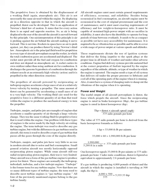The useful output of all aircraft power plants is thrust — the force which propels the aircraft. Since the reciprocating engine is rated in brake horsepower (BHP), the gas turbine engine is rated in thrust horsepower (THP). THP equals thrust times aircraft speed (mph) divided by 375 mile-pounds per hour. The value of 375 mile-pounds per hour is derived from the basic horsepower formula: 1 horsepower equals 33,000 foot-pounds per minute; 33,000 times 60 equals 1,980,000 foot-pounds per hour; divided by 5,280 feet per mile equals 375 mile-pounds per hour.